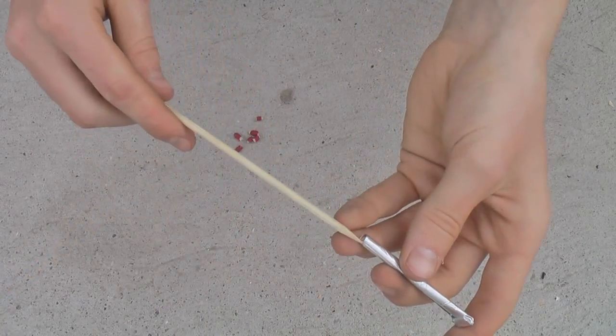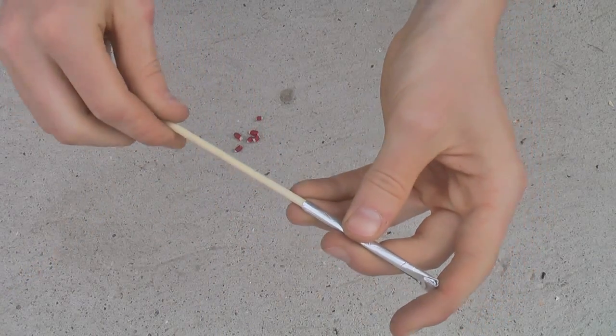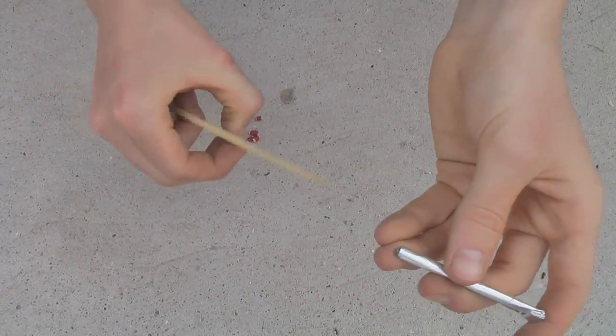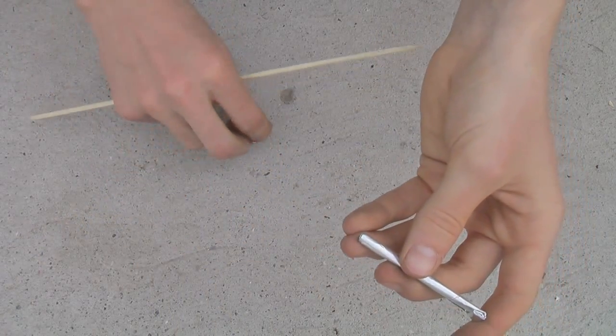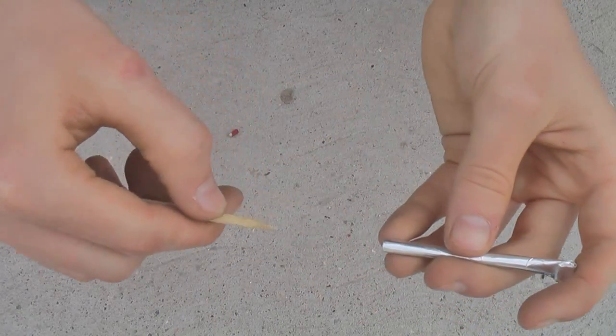Take your match heads and shove them one by one into the end of your aluminum tube. You can use your stick to shove them all the way back as far as they'll go. Keep doing this until all the match heads are used up, or until you have about a half inch of room left.